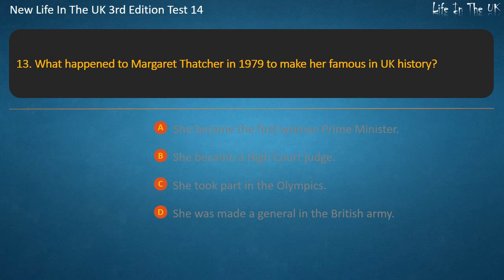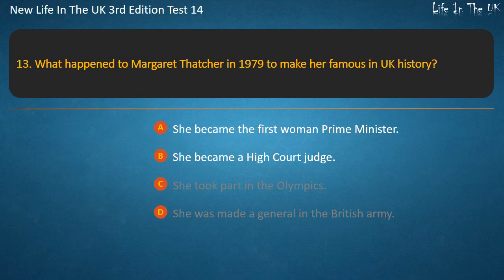Question 13. What happened to Margaret Thatcher in 1979 to make her famous in UK history? She became the first woman Prime Minister, she became a High Court Judge, she took part in the Olympics, or she was made a General in the British Army. Answer: She became the first woman Prime Minister.